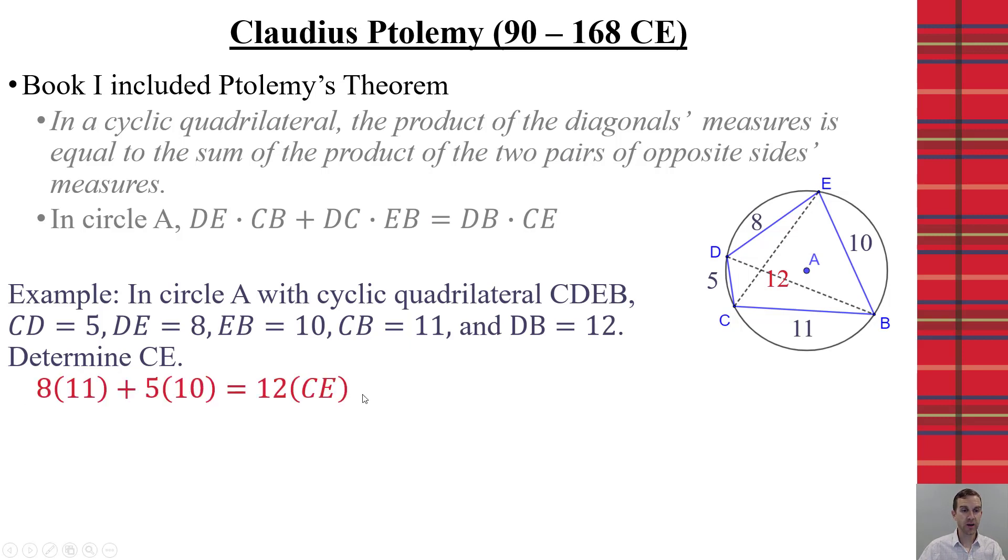What we get is that we do 8 times 11, opposite sides, plus 5 times 10, will equal 12 times CE. So, we're going to simplify our left-hand side here. 88 plus 50 equals 12 CE. We're going to then divide by 12 to get that it's 23 halves, or 11 and a half will be the length of CE.